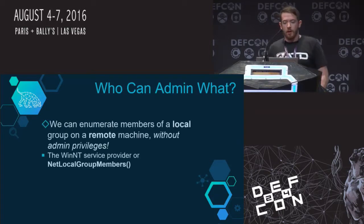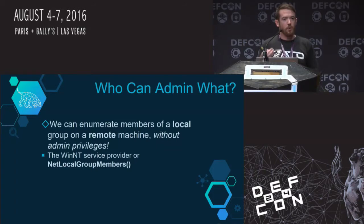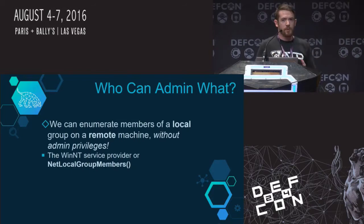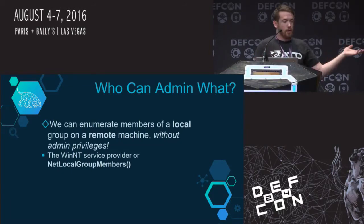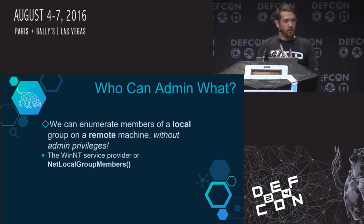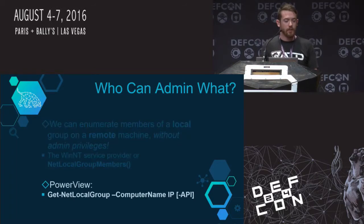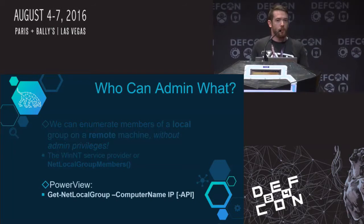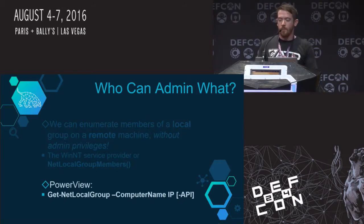Next: who can admin what? As an unprivileged user, we can enumerate members of a local group on a remote machine without needing administrator privileges on that remote machine. There are two ways: using the WinNT service provider, a remnant of NT domain deployments, and the NetLocalGroupMembers API call. Point it at a remote server and it happily gives you back who the members of local administrators are, their domain SID, and whether they're a group or user. The PowerView function is Get-NetLocalGroup.